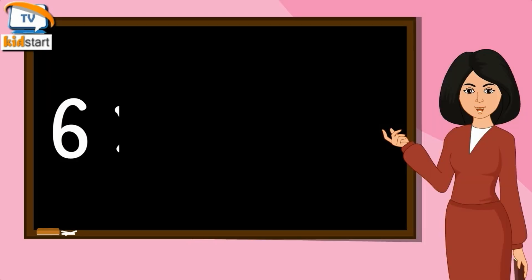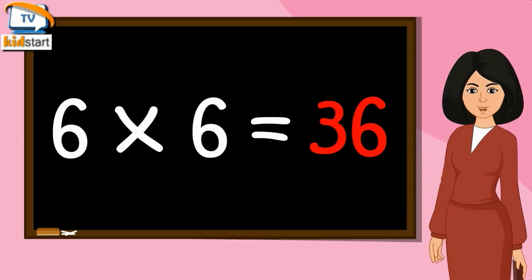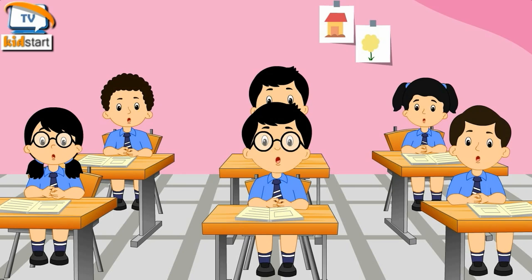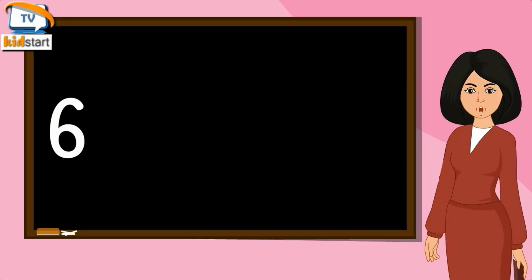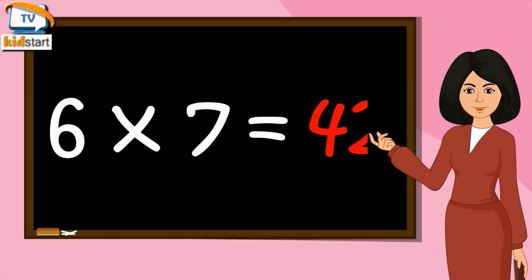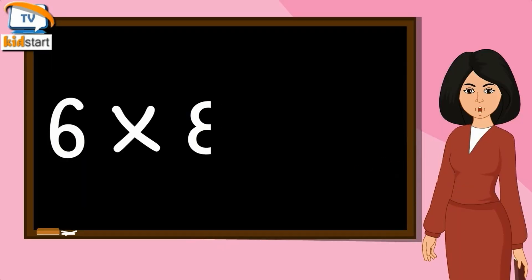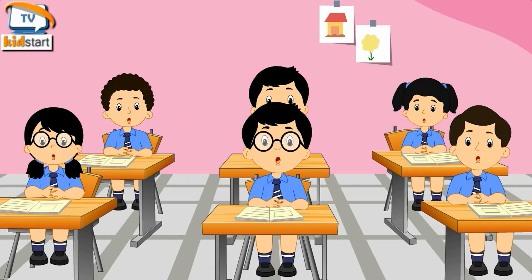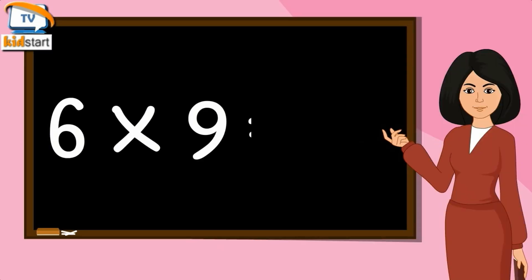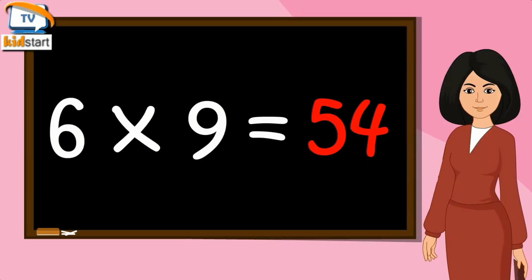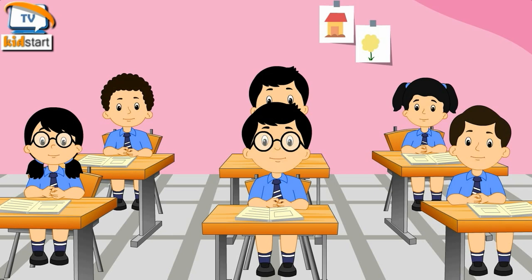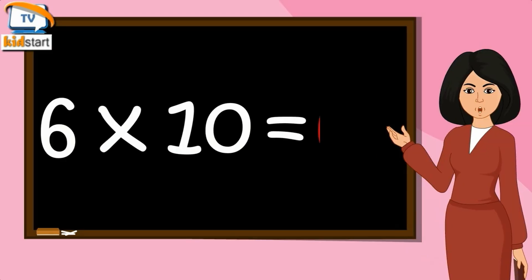6 sixes are 36, 6 sixes are 36. 6 sevens are 42. 6 eights are 48. 6 nines are 54. 6 tens are 60.